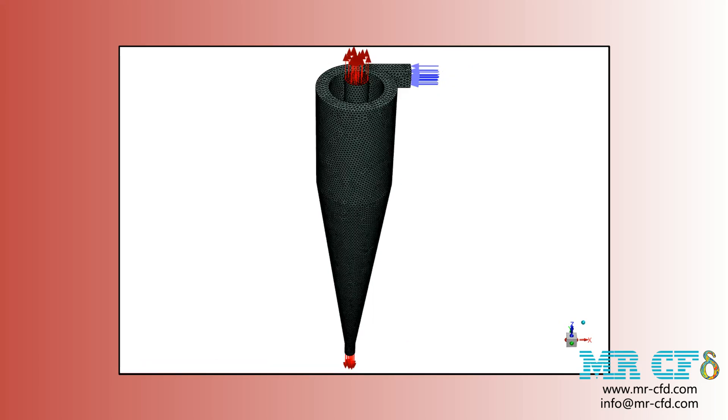In this slide, you can see the mesh performed for this geometry. The geometry is meshed in ANSYS meshing software and the mesh type used for this geometry is unstructured. The total element number is equal to 228,517.